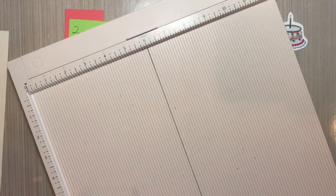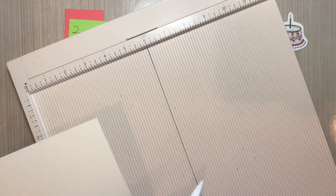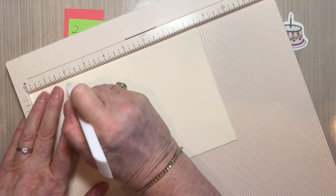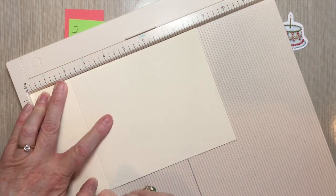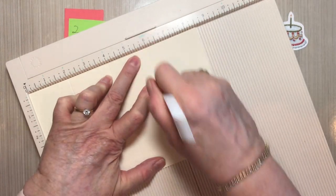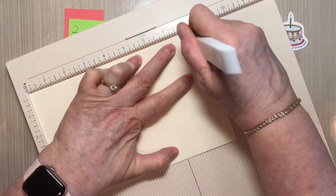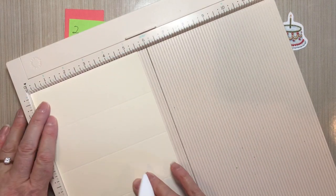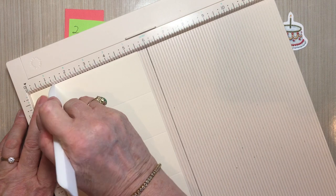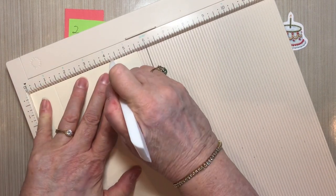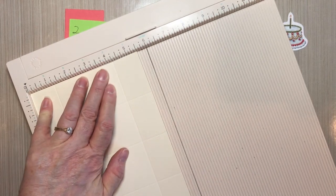If you are starting with a 5.5x8.5 inch sheet of paper, you do the same scoring at 2 inches, 4 inches, 6 inches, and again at 8. Rotate it 90 degrees. This one, though, you score at 1.5 inches and 4.5 inches.